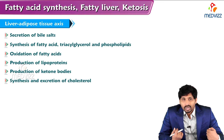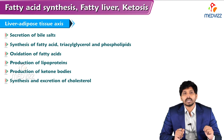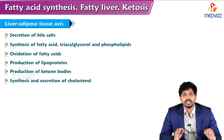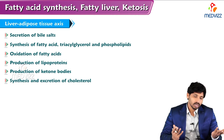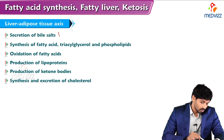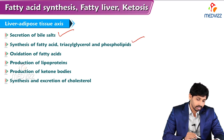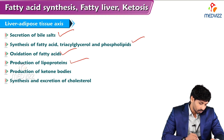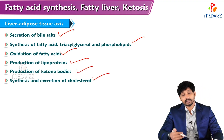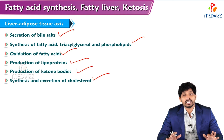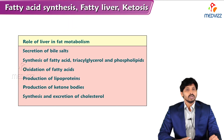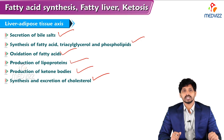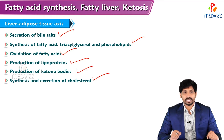The main roles of the liver in the metabolism of TAG between liver and adipose tissue include: secretion of bile salts, synthesis of fatty acids, triacylglycerols and phospholipids, oxidation of fatty acids, production of lipoproteins, production of ketone bodies, and synthesis and excretion of cholesterol. All these play a major role in balancing the liver and adipose tissue axis. That's all about TAG synthesis and its metabolism in adipose tissue. Thank you for watching.